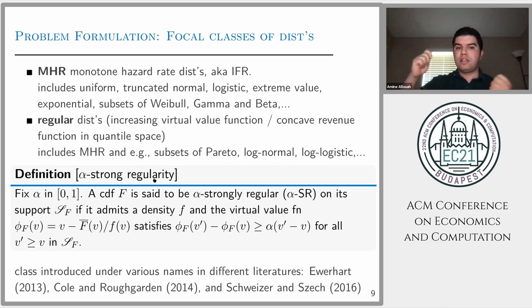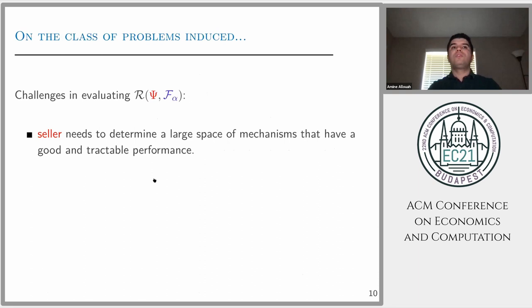Our approach not only applies to these classes of distributions but also to any alpha strongly regular class of distribution, which is an interpolation between these two classes introduced in previous literature. In this talk, I will focus on the MHR and regular class of distributions. In the paper, we have the more general alpha strongly regular distributions.